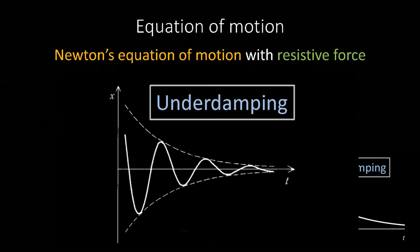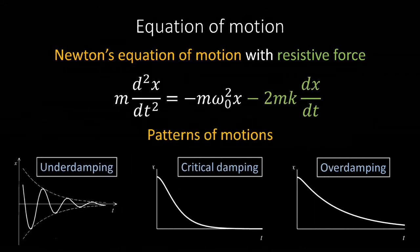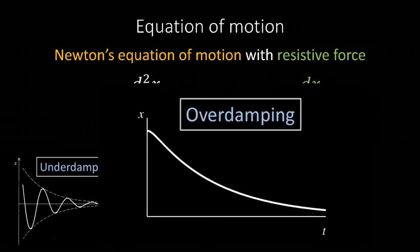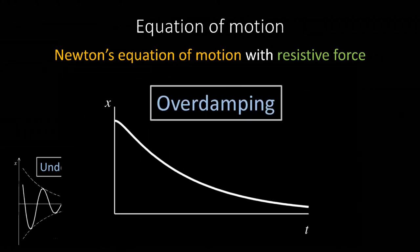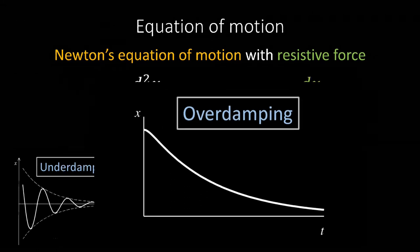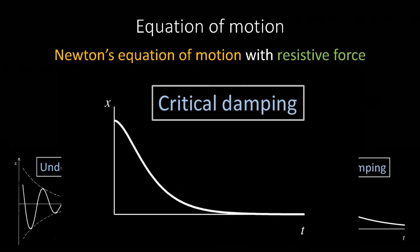When the resistance force is small, the motion is called underdamping, which means it dampens while oscillating. When the resistance is high, the motion pattern becomes overdamped, which is a monotonous damping motion. The motion pattern at the boundary is called critical damping.